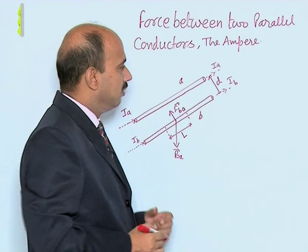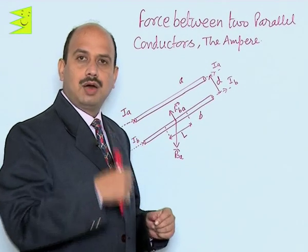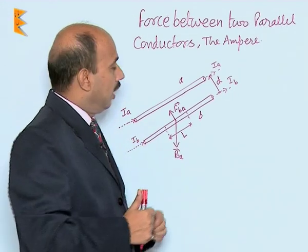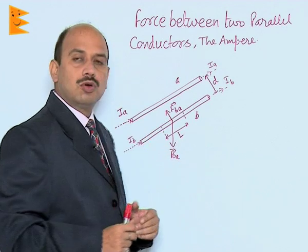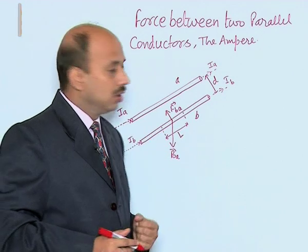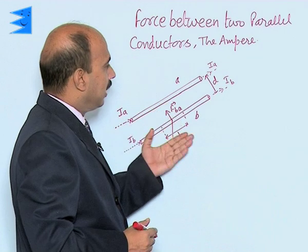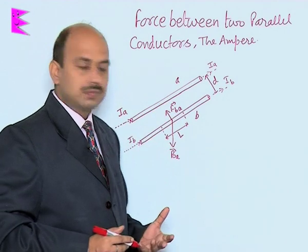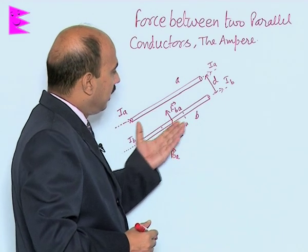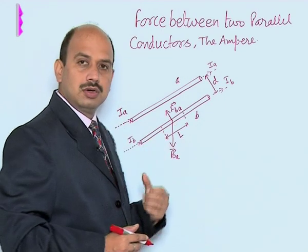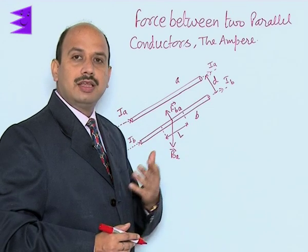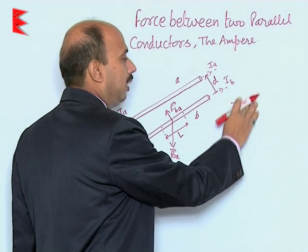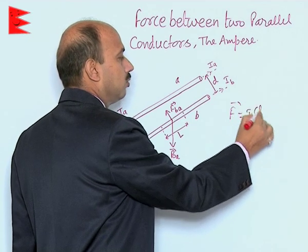Conductor A has a magnetic field around it, which we can calculate using the right-hand thumb rule. Similarly, conductor B has a magnetic field around it. Conductor B is lying in the magnetic field of conductor A, and conductor A is lying in the magnetic field of B. They experience a magnetic force according to the formula F = I L × B.